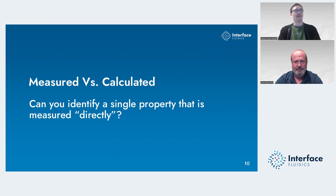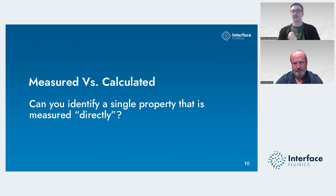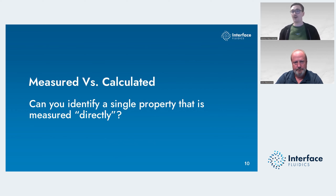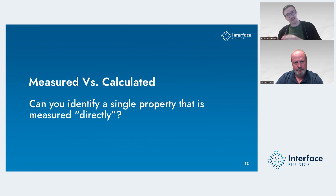For me, the one beacon of light is always the flash total density. That's a number that in any PVT report from any lab, should be in the report and is at least tied closely to something that is always measured. Beyond that, the flash-phase compositions are closely related to something actually measured. And that's the story throughout this presentation — it's kind of measured, but also kind of correlated to something that's actually measured.